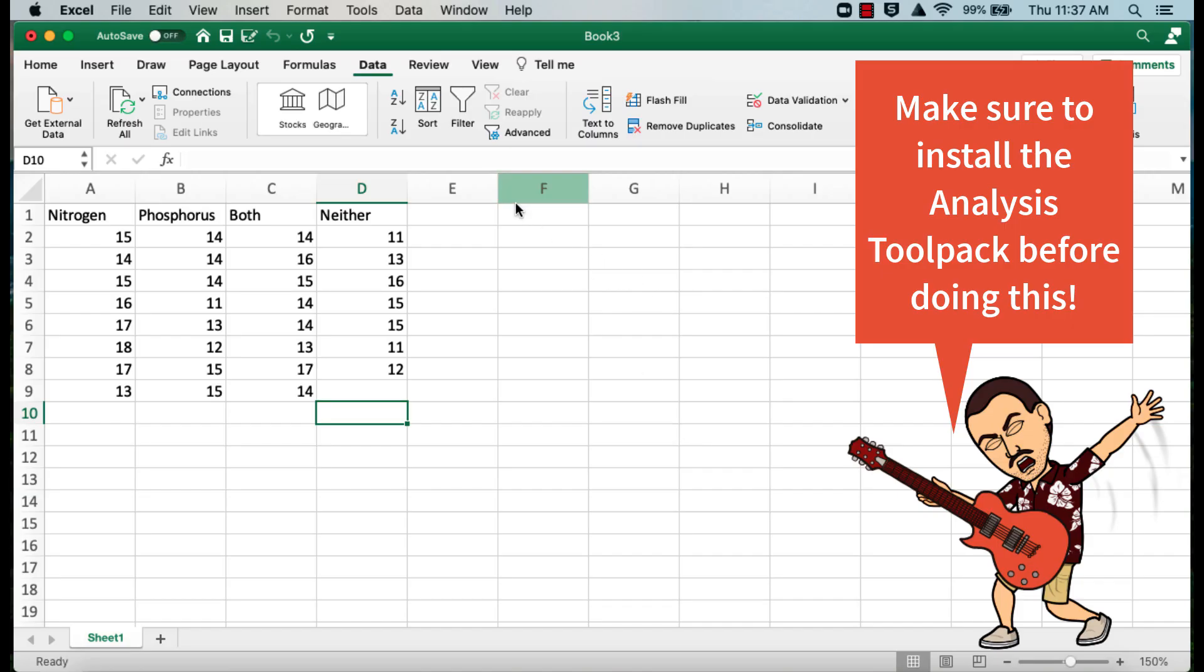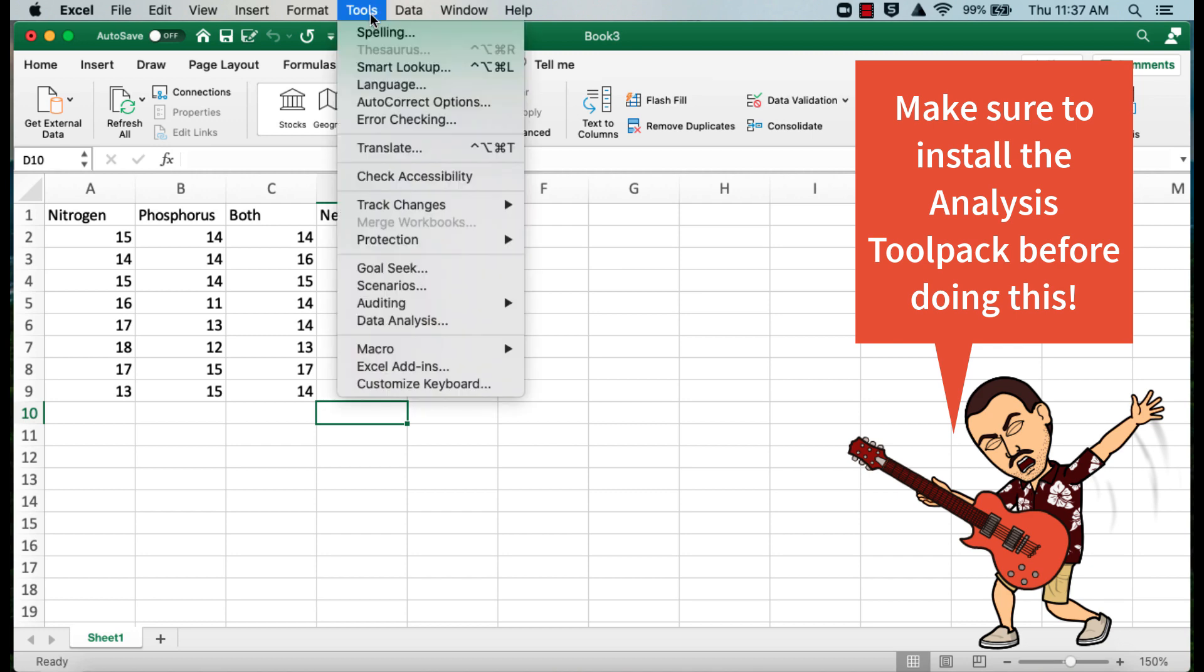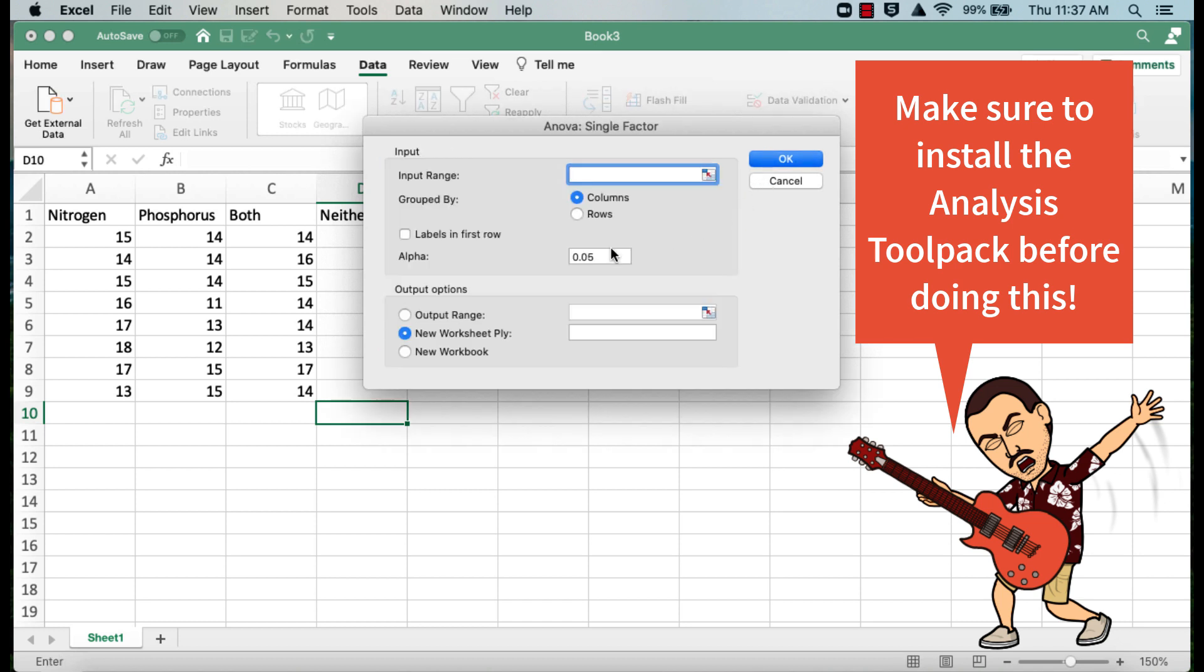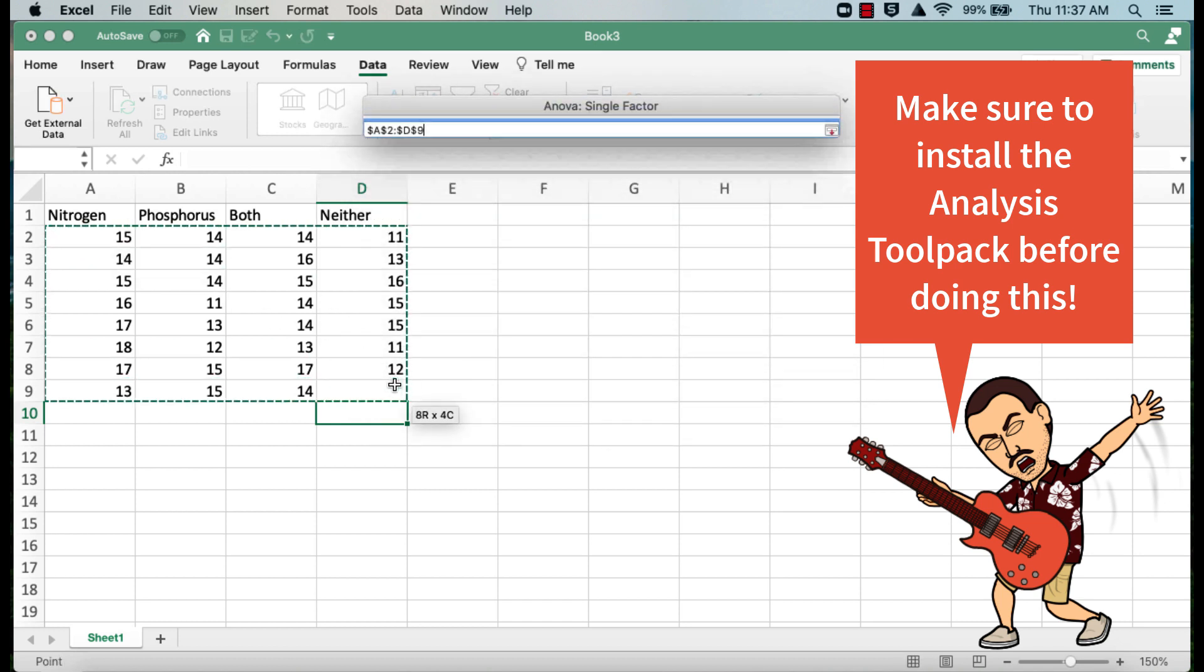So let's now do it with Microsoft Excel. We go up to Tools, Data Analysis, ANOVA, Single Factor, and then we drag over our data.